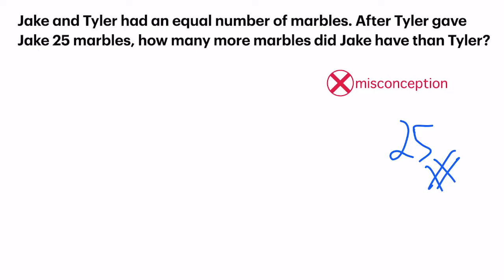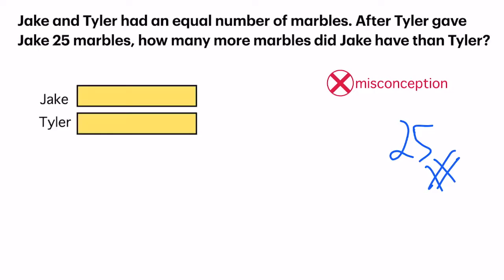Given the equal length to represent the equal number of marbles, we now have to move the 25 marbles from Jake to Tyler. So the 25 marbles will come from here. See these 25 marbles — they will be moving downwards.